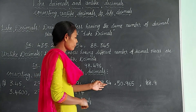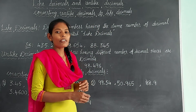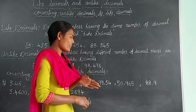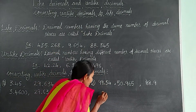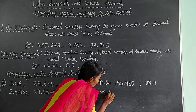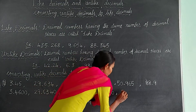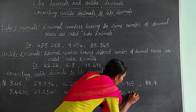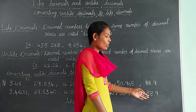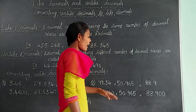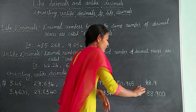Let us see one more example. Here we have 99.34, 50.965, and 88.9. First, what we have to do? We have to check which decimal number has the highest number of decimal places. Here, 50.965 has the highest number of decimal places — it has 3 decimal places. Write 99.34: this decimal already has 2 decimal places, so add 1 zero. Write 88.9: it has 1 decimal place, so add 2 zeros. Observe these decimals — they have the same number of decimal places, so these decimals are known as like decimals.